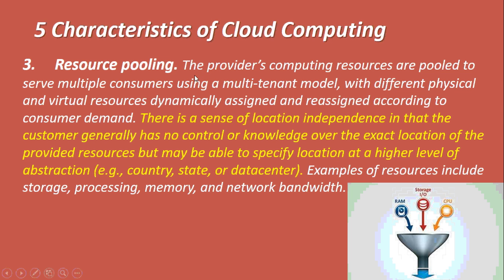The third characteristic is resource pooling. The crux of resource pooling is that whichever provider you use — IBM, Rackspace, or AWS — it should have a pool of resources. Resources like RAM, storage, and CPU should be pooled and not limited. It should support a multi-tenant environment — it should not be the case that only a fixed number of CPUs or a fixed RAM or storage capacity is provided. There should be a pool of resources accessible by different users via multi-tenancy.